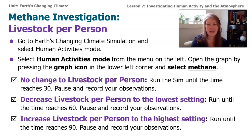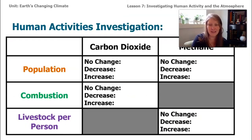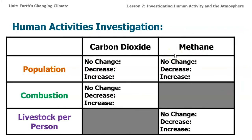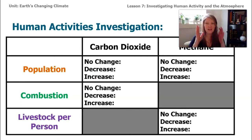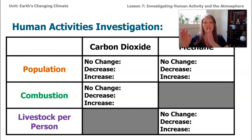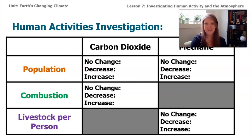These directions are complicated, so there's a data table to help keep track. The first column has the three variables: population, combustion, and livestock per person. The next two columns are for carbon dioxide and methane, since we want to track what's happening with each variable for both gases. The directions are: no change, then decrease, then increase — for carbon dioxide with population, carbon dioxide with combustion, methane with population, and methane with livestock.